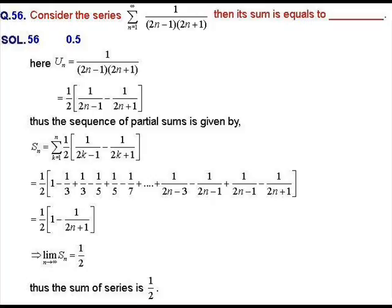After partial fraction decomposition, we get uₙ = (1/2) · [1/(2n−1) − 1/(2n+1)]. To find the sum of the series we use the sequence of partial sums, which is the sum of the first n terms. Evaluating this telescoping sum gives Sₙ = (1/2) · [1 − 1/(2n+1)]. Taking the limit of Sₙ as n → ∞, the limit equals 1/2.